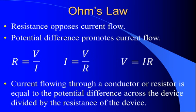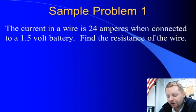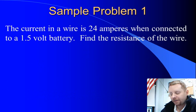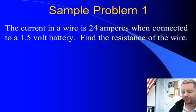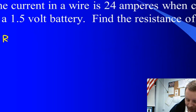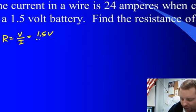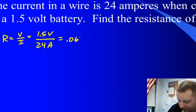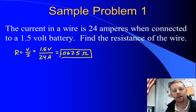Let's see how we can apply this. The current in a wire is 24 amperes when connected to a 1.5 volt battery. Find the resistance of the wire. If we're looking for resistance, resistance equals potential difference divided by current flow, which is going to be 1.5 volts over 24 amps, which gives us 0.0625 ohms. A very straightforward application of Ohm's law.